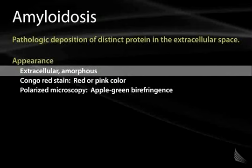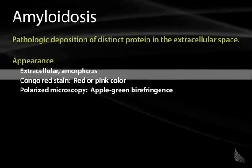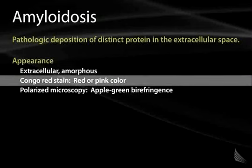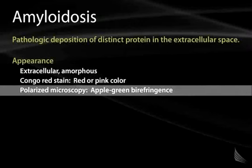Pathologists use a particular stain called the Congo red stain, which highlights the red or pink color of amyloid. Also, the Congo red stain, when viewed under polarized microscopy, gives the amyloid a particular color known as apple green birefringence.